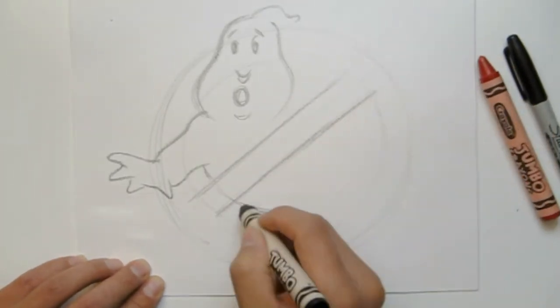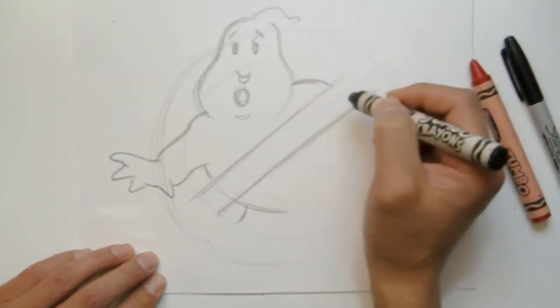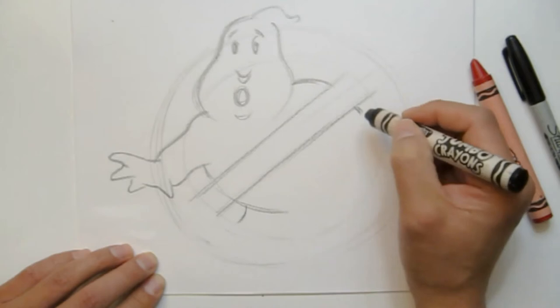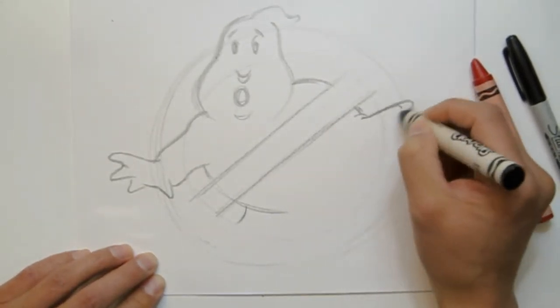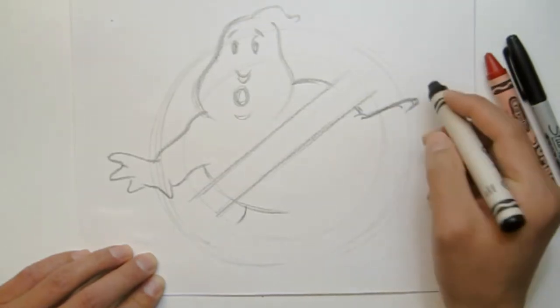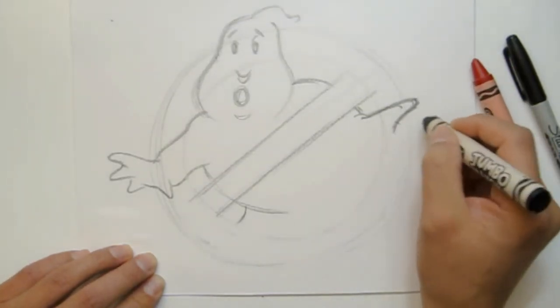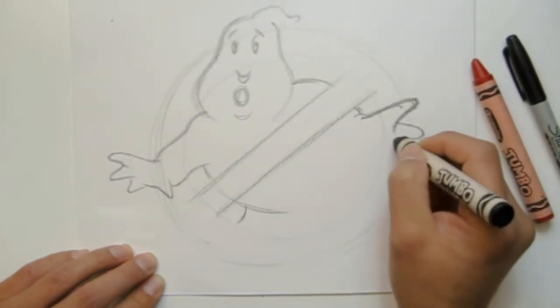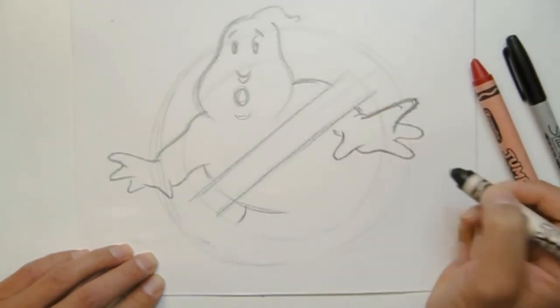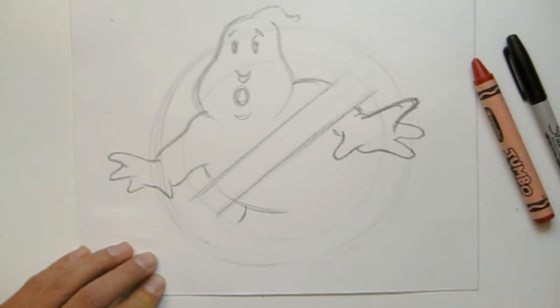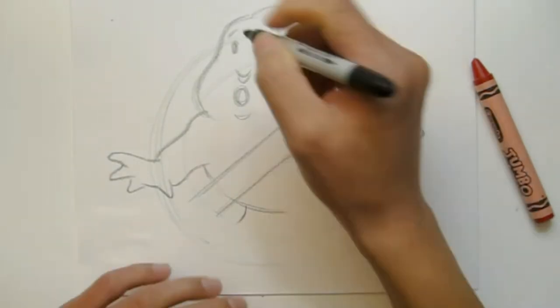Now I'm putting in the finger. The finger and the body kind of comes through that diagonal line, which I just roughed in. And now the other hand, the other finger, just comes through that circle a little bit. And then the thumb.